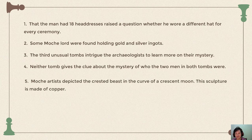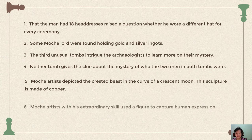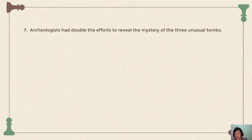Next: 'Moje artist depicted the crested beast in the curve of a crescent moon. This sculpture is made of copper.' This is correct. Then: 'Moje artist with his extraordinary skill used a figure to capture human expression.' This is incorrect. 'Moje artist' refers to more than one artist, so the possessive pronoun should be 'their,' not 'his.' The determiner must agree with the noun it refers to.